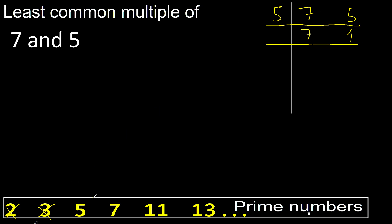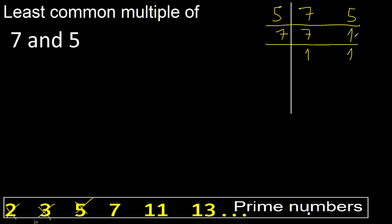Cannot be divided by 5? Can be divided by 7. 7 divided by 7 is 1. 1 cannot be divided by 7, therefore equal 1.